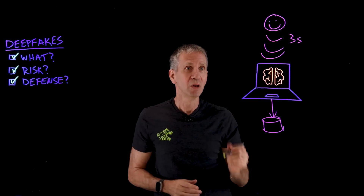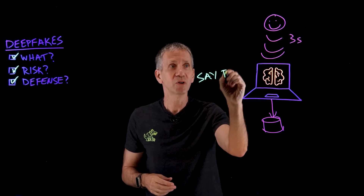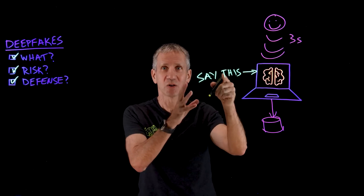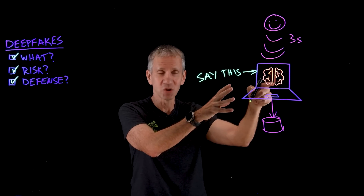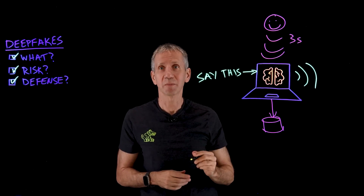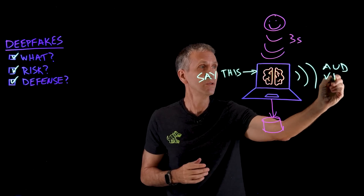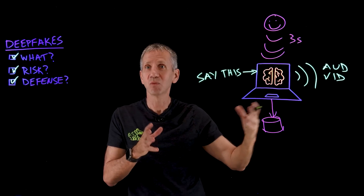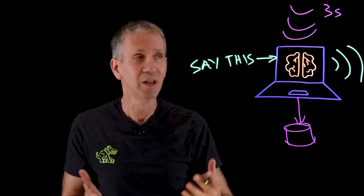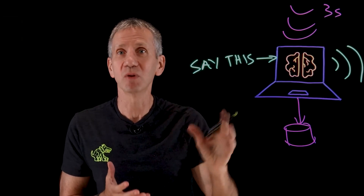Then, once you've built the model, what you do is type into the system whatever you want it to say. If I type in some text and enter it into the deepfake generator, it will generate a sound that sounds just like that person or very similar to them. We can do this with audio, we can do this with video. The video will actually show the mannerisms of the person and what they look like as well. These things can be very convincing, and this technology is only getting better.